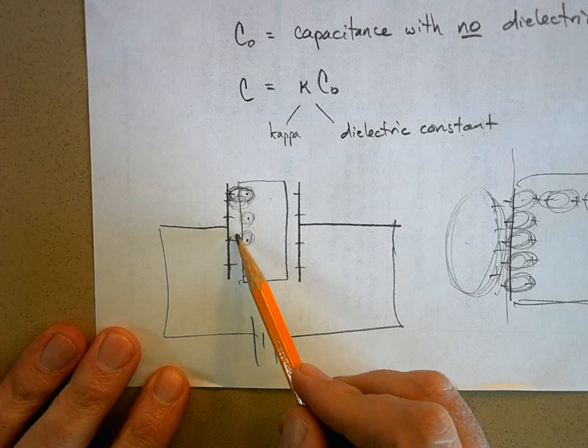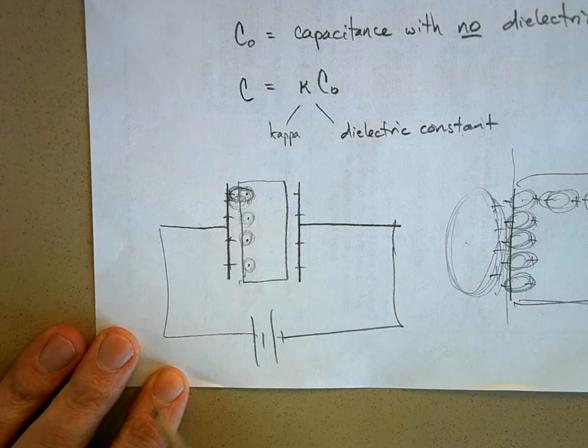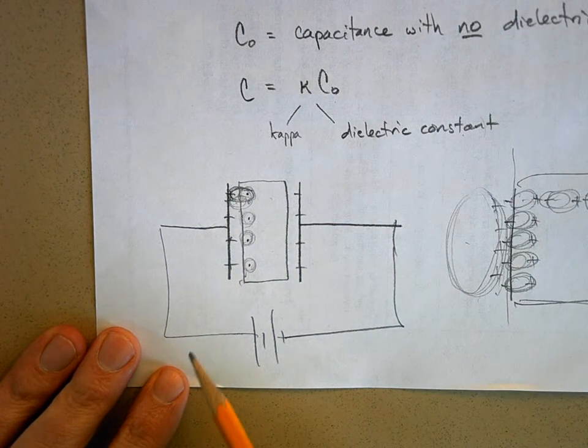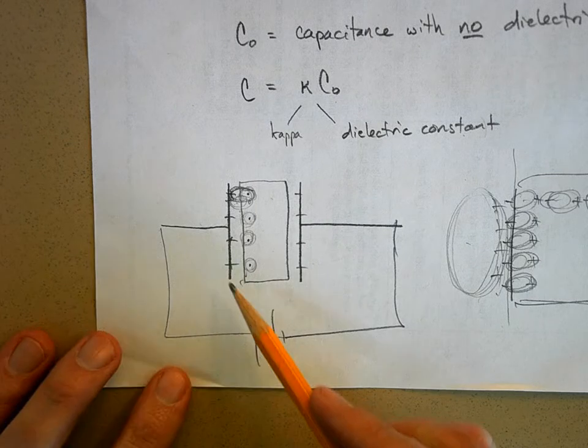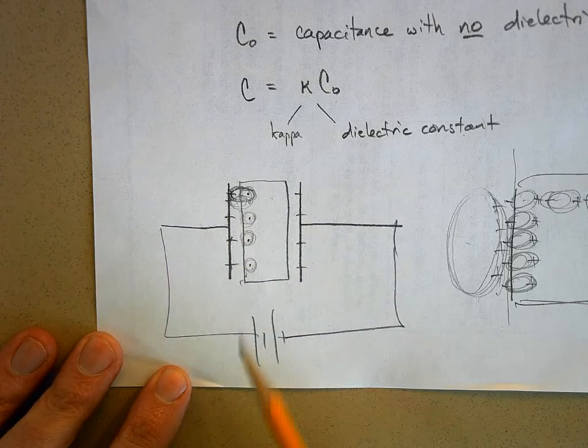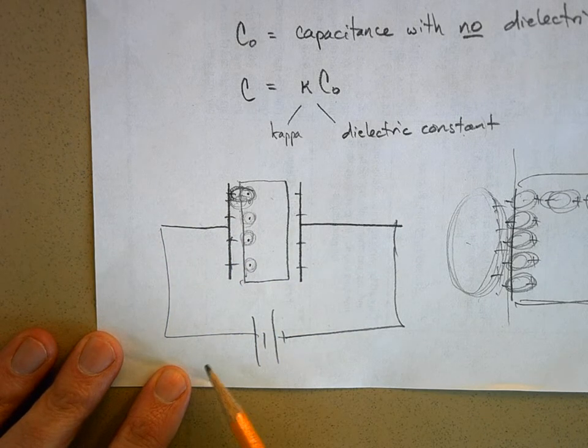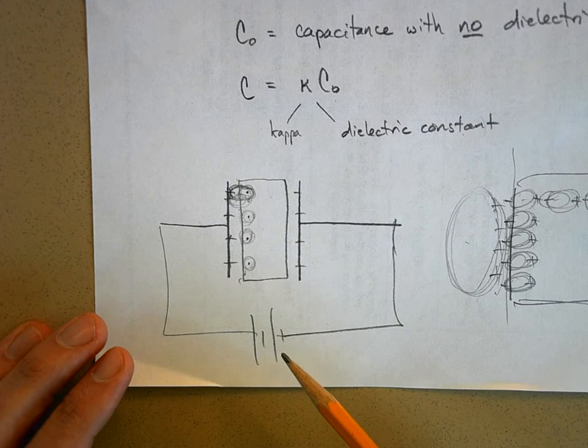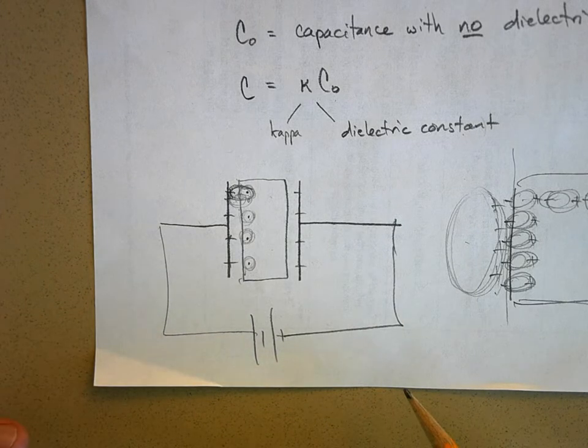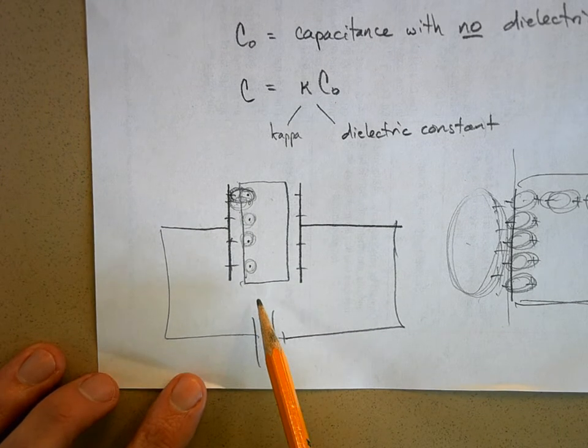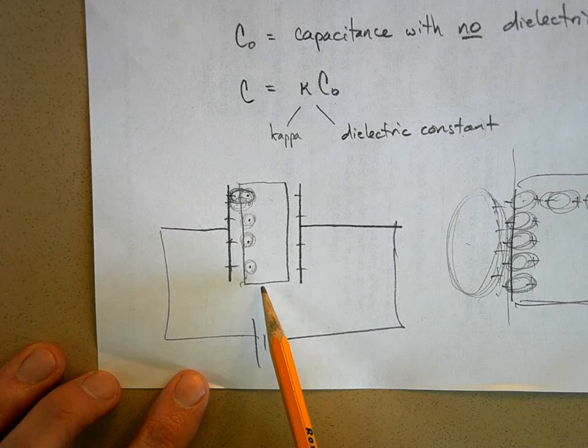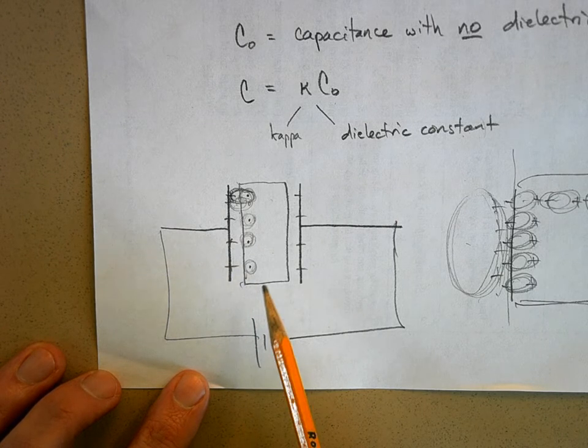And now, some materials have a little bit of an effect, like paper. It allows you to store 3.7 times the amount of charge on here than you would have if there was nothing. But bakelite is 4.9. Now, by the way, it's these materials that they're really trying to figure out, new materials, the material science of this, is to make ultra capacitors that we were talking about before.